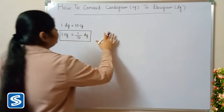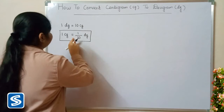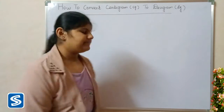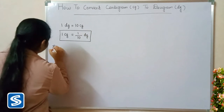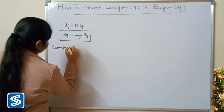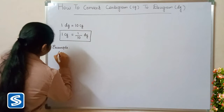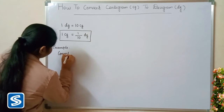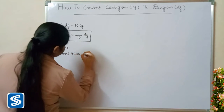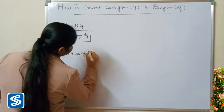So the formula for converting centigram to decigram is: 1 centigram is equal to 1 by 10 decigrams. Now we will take some examples. For example, we can take: convert 9500 centigrams into decigrams.